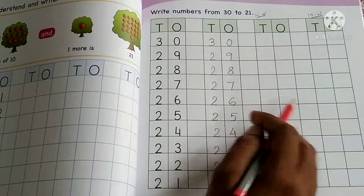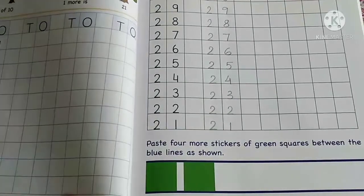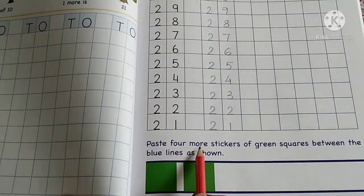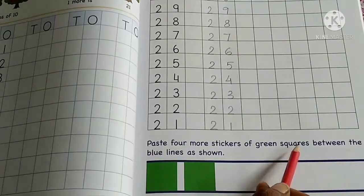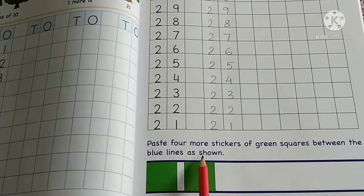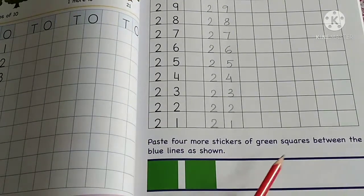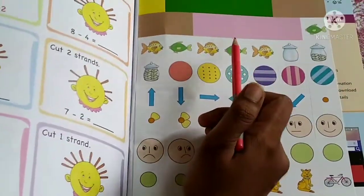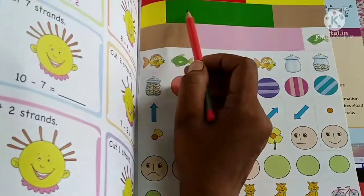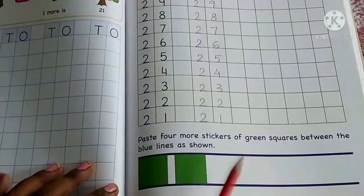And below you can see that the same work is given here. Paste 4 more stickers of green squares between the blue lines as shown. So here you have to paste the stickers in green color. And you know from where you will get the stickers? From the back side of your book. Here you will get the stickers, green color stickers. 4 stickers you will take from here and you will paste on the blue line.